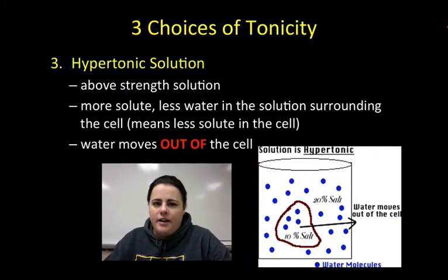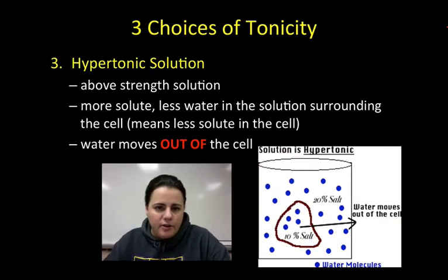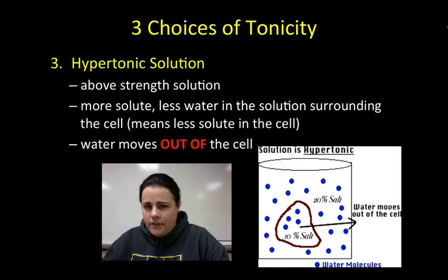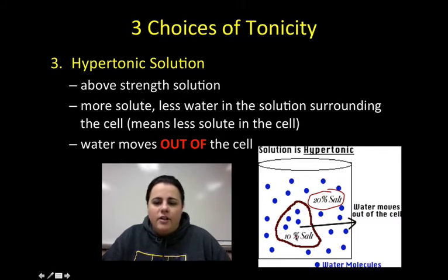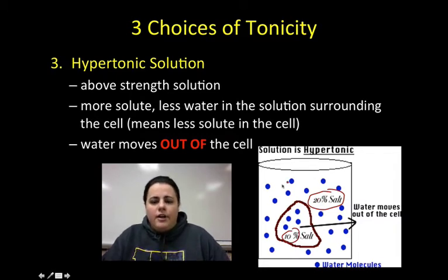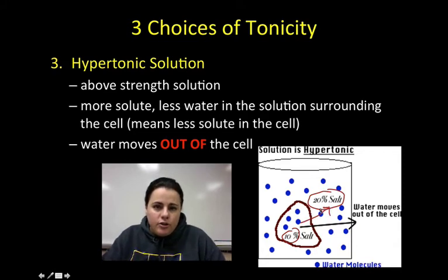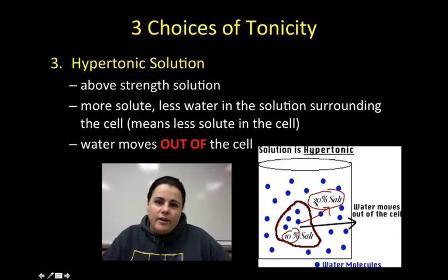The last one is hypertonic. When a cell is in a hypertonic solution, hyper means above, so the cell is surrounded by a solution above its internal concentration. In the picture, we have a hypertonic salt solution — 10% inside but 20% outside. Water will move to the hypertonic side because that's where there's more stuff and a higher concentration of solute. So in this case, water will leave the cell.